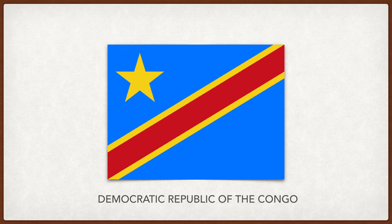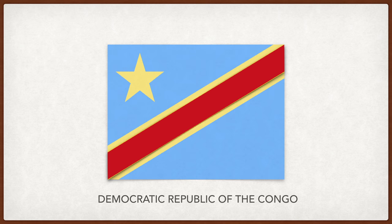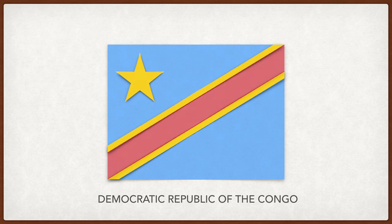The Democratic Republic of the Congo. Blue stands for peace, red stands for the blood of the country's martyrs, yellow for the country's wealth, and the star represents a radiant future for the country.